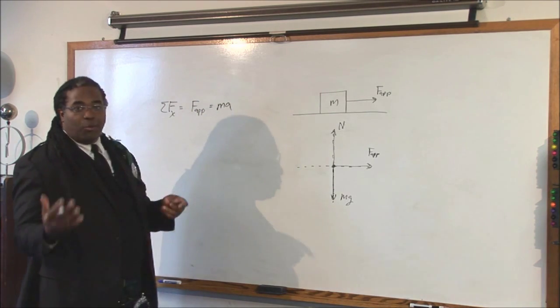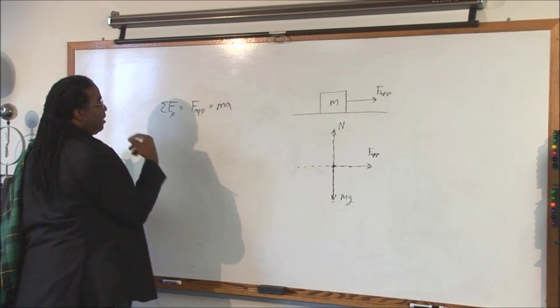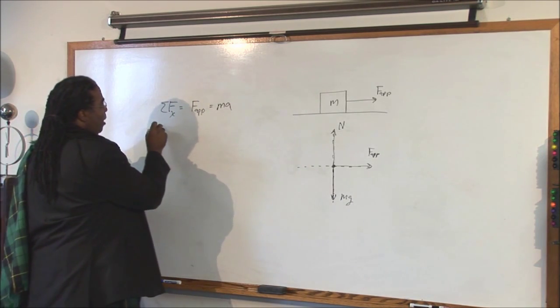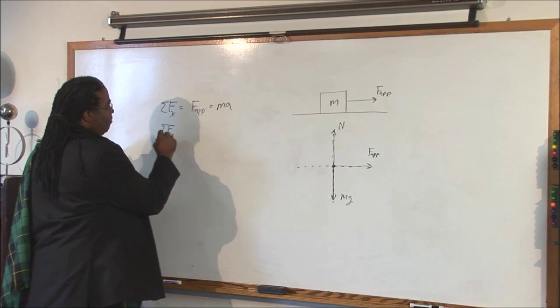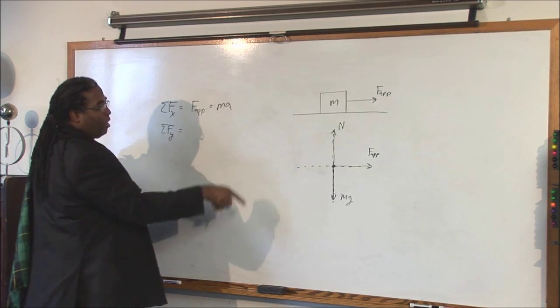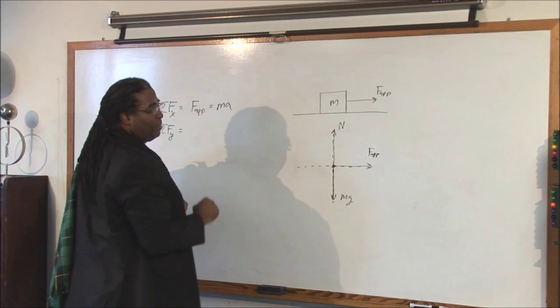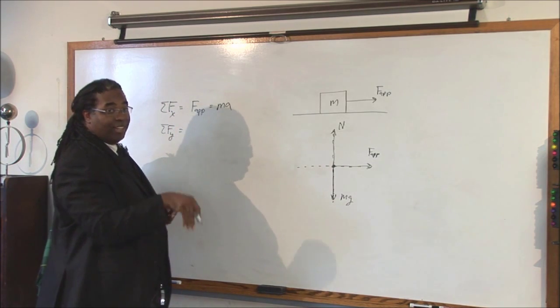Then the sum of the forces in the y direction. Because, remember, we're adding like components. Now we're doing the y component. So, all I have to do is look at my arrows that are going up and down. If they're up, they're positive. If they're down, they're negative.